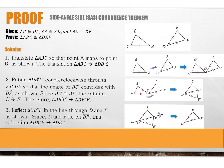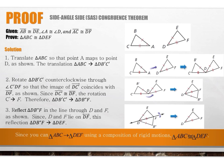In our final step, reflect triangle DB prime F in the line through DF. Since D and F lie on line DF, this reflection maps triangle DB double prime F onto triangle DEF. We end up with the exact same triangle on top of itself. In conclusion, since we can map triangle ABC onto triangle DEF using a composition of rigid motions, triangle ABC is congruent to triangle DEF.